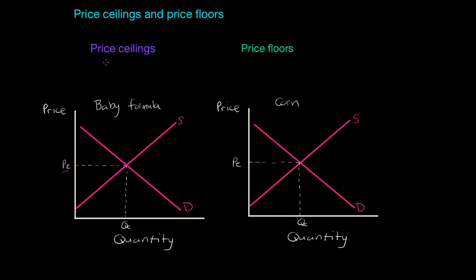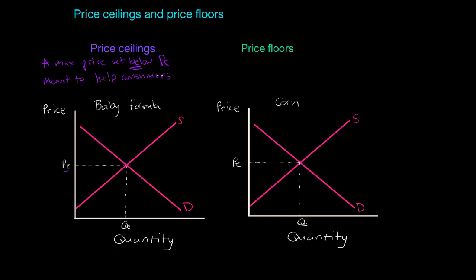Let's start with the price ceiling. A price ceiling is a maximum price set by the government, usually below the equilibrium price, meant to help consumers of a good. By setting a price below PE, the intention is to make a good more affordable to benefit those who need the good the most. Let's look at our graph and show the effect of a price ceiling on the market for baby formula.